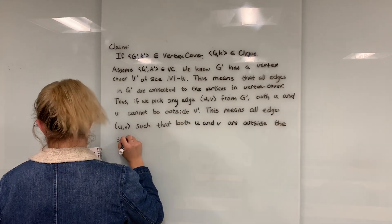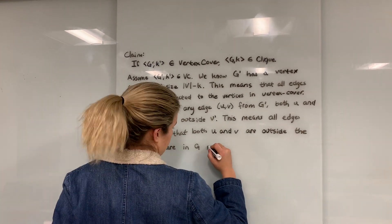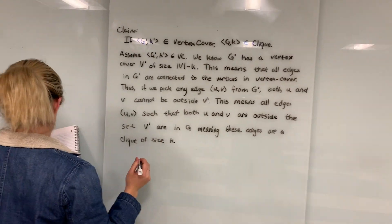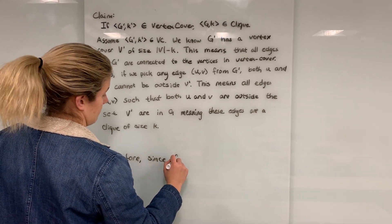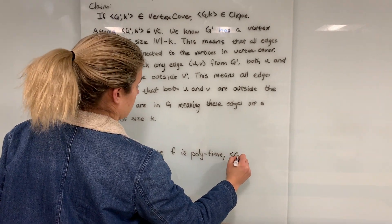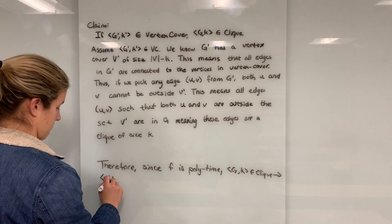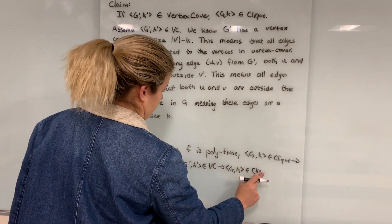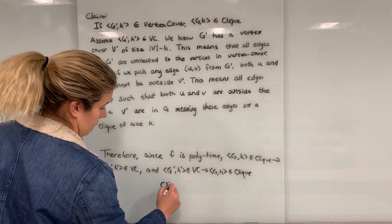So we have a function F computable in polynomial time, which maps clique to vertex cover. Since clique is NP-hard, we know vertex cover is also NP-hard. Since vertex cover is in NP and vertex cover is NP-hard, vertex cover is NP-complete.